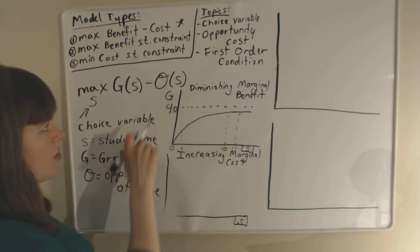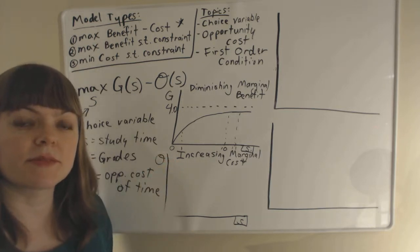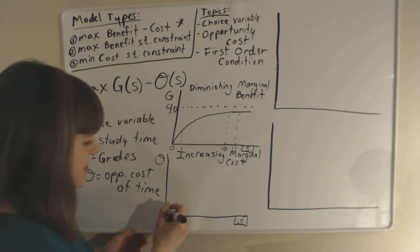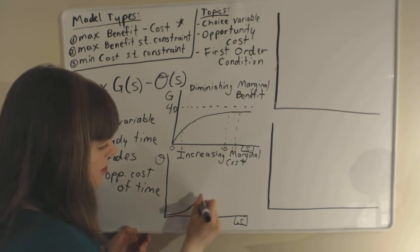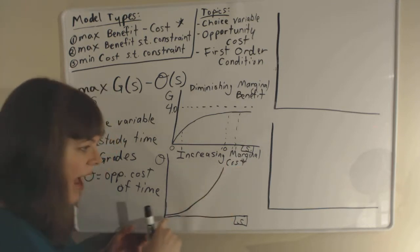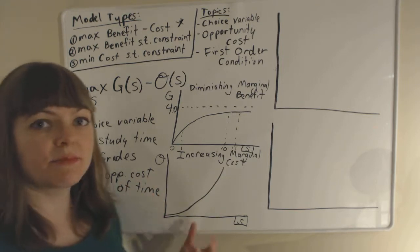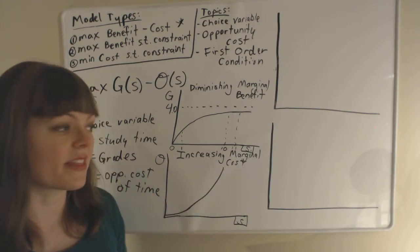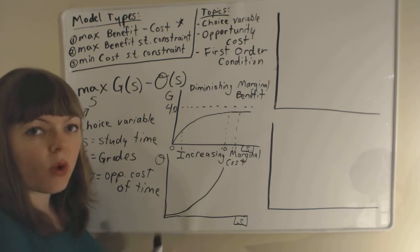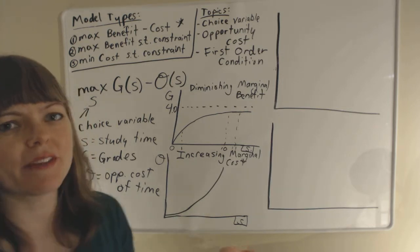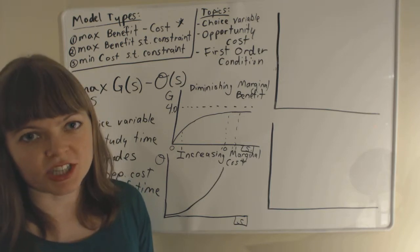Now let's graph the cost function. Our costs are the opportunity cost of time spent studying, and there tends to be an increasing marginal cost — cost functions tend to have this upward-curving shape. Let's think about why that's the case in this particular situation. For the first hour of studying, what do you have to give up? You might give up some time surfing the internet or watching television — it's not really that costly to study one hour a week.